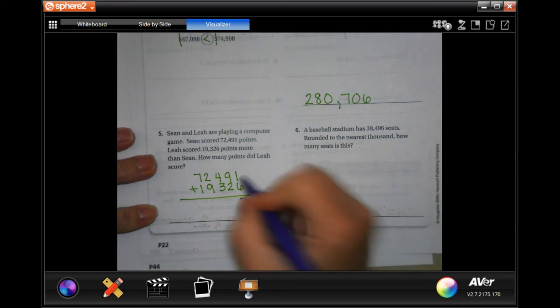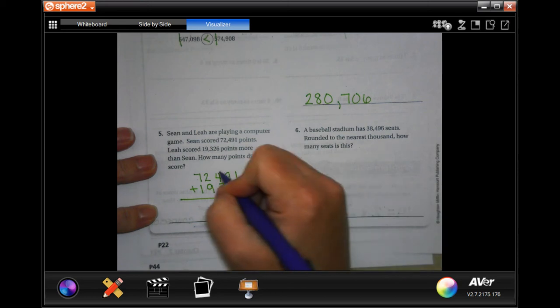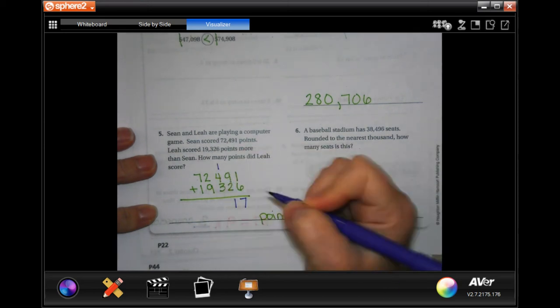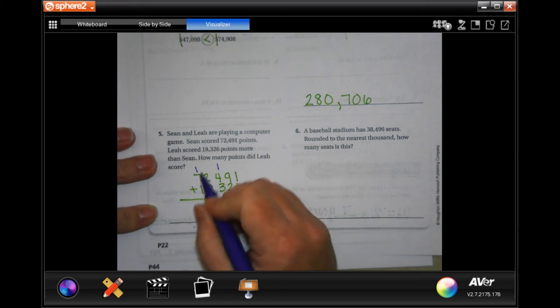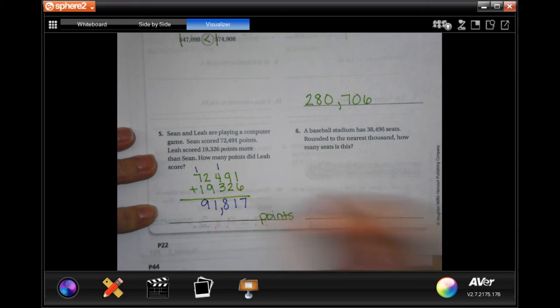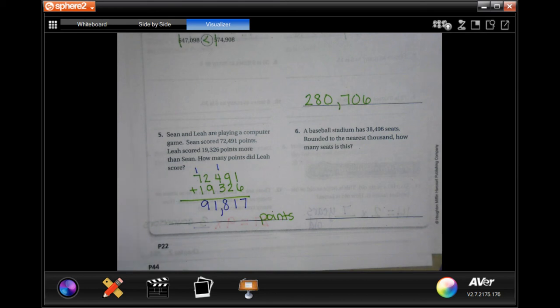One plus six is seven. Two plus nine is 11, carry that one. One plus four is five, plus three more is eight. Two plus nine is 11, carry that one. One plus seven is eight, plus one more is nine. So 91,817 points.